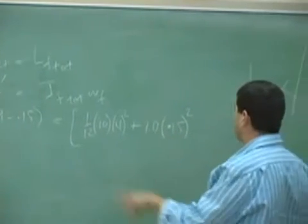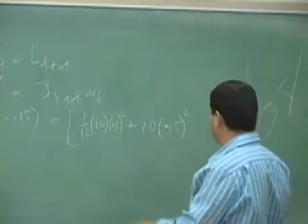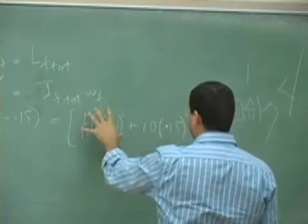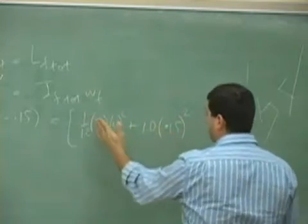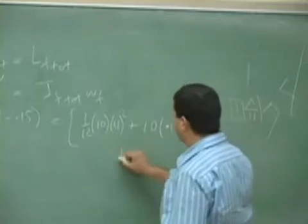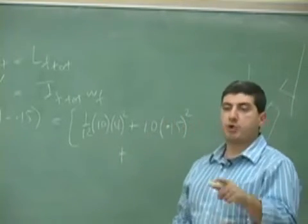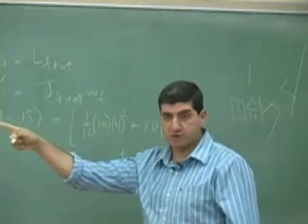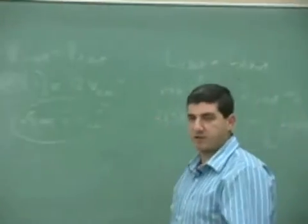So, 1/12th times 10 times 4 squared, plus 10 times 0.15 squared. So, now this is the moment of inertia of the ruler about the new center of mass because we took the old center of mass and we shifted it by 0.15. Then we add to that the moment of inertia of the object which is stuck on the ruler about the new center of mass.